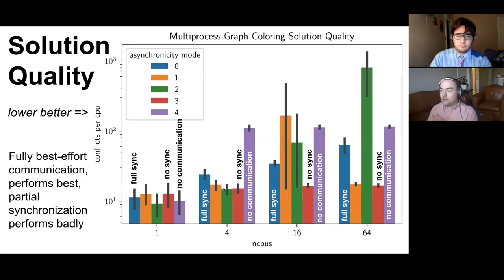And we were also able to see significant improvement in solution quality for the best effort communication model. So what we're seeing here is the number of conflicts that are left over in the graph coloring after the algorithm has run for a fixed period of time, and so lower is better here. And you can see that at 16 and 64 processes we have significantly better solutions for the fully asynchronous best effort communication model compared to the perfect communication model.